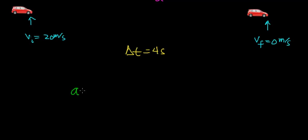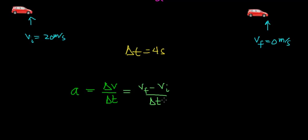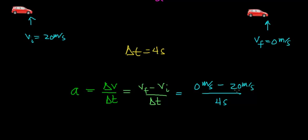The definition of acceleration is how fast the velocity changes, which is written as the change in velocity divided by the time it takes to change that object's velocity. Or you could write this as the final velocity minus the initial velocity, divided by the time. In this case, that's 0 meters per second minus 20 meters per second, divided by 4 seconds. So you get 0 minus 20, which is negative 20 meters per second, divided by 4 seconds. Negative 20 divided by 4 is negative 5, and our units are meters per second per second, or meters per second squared.